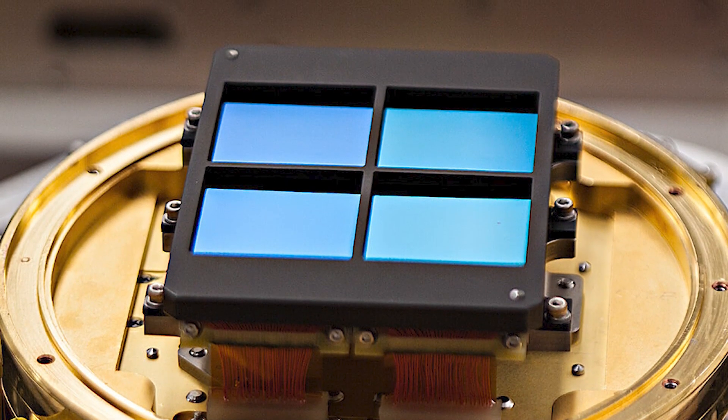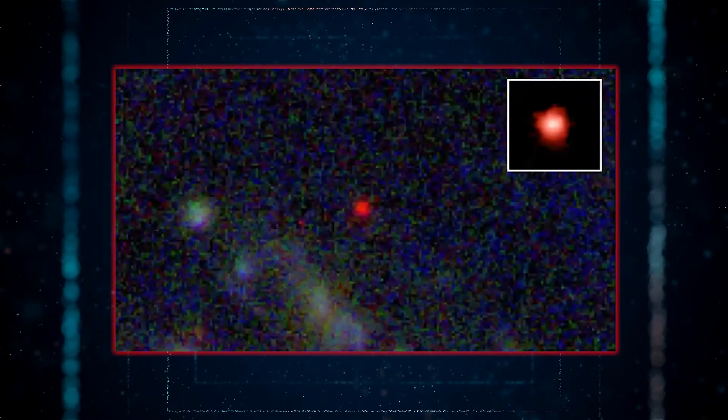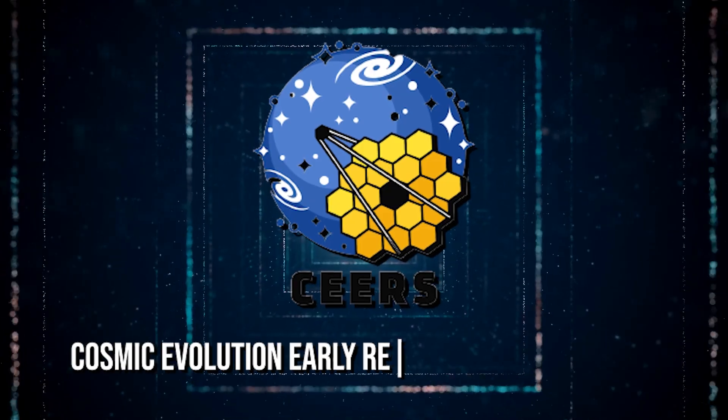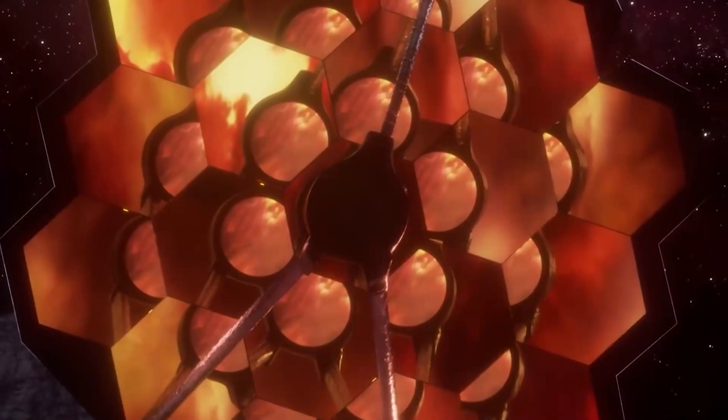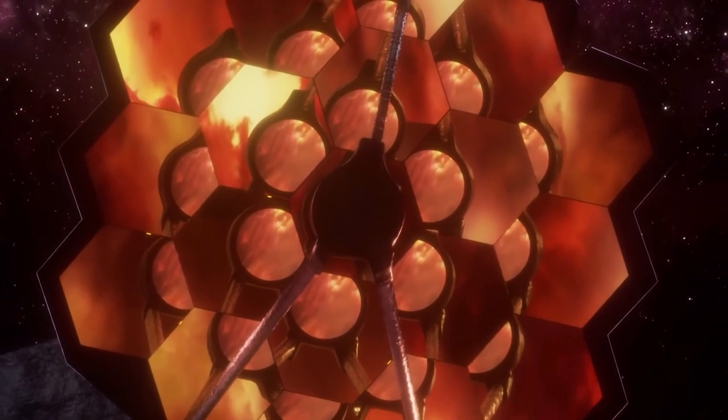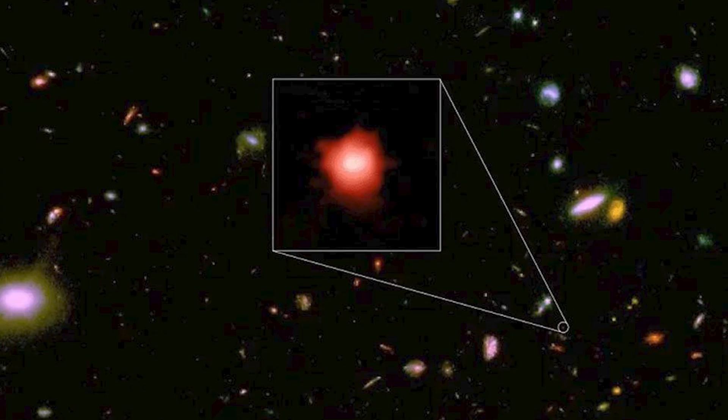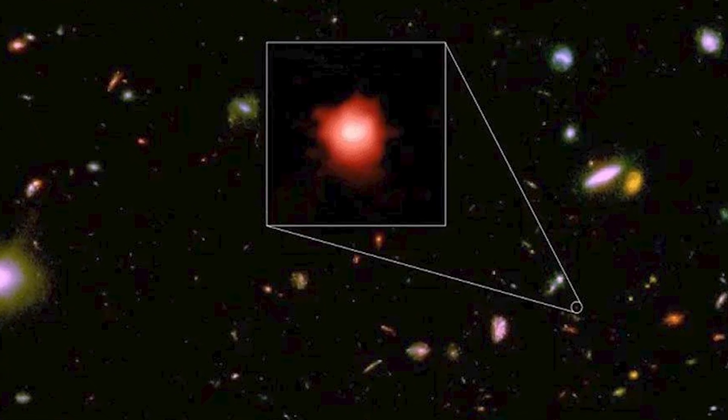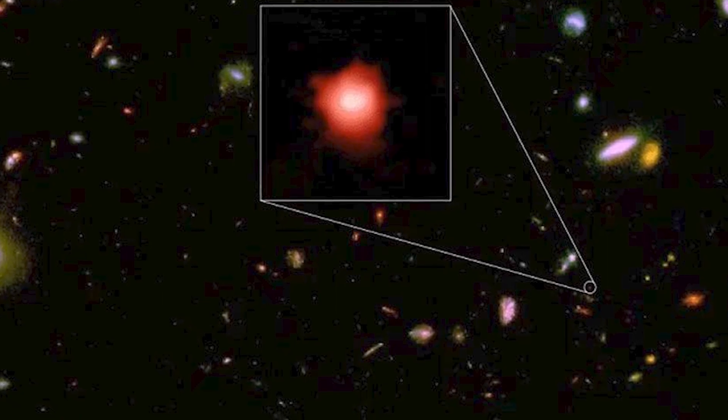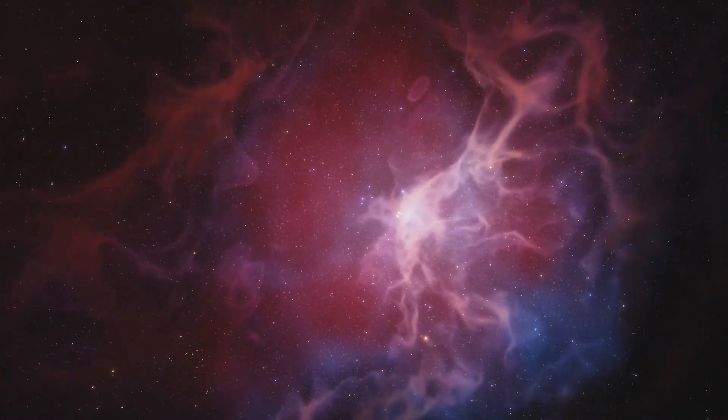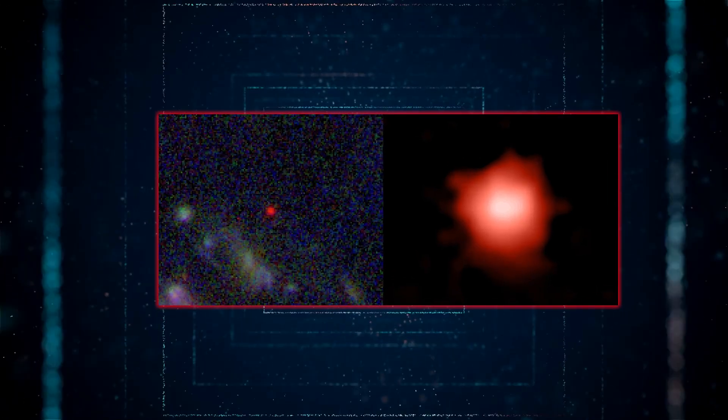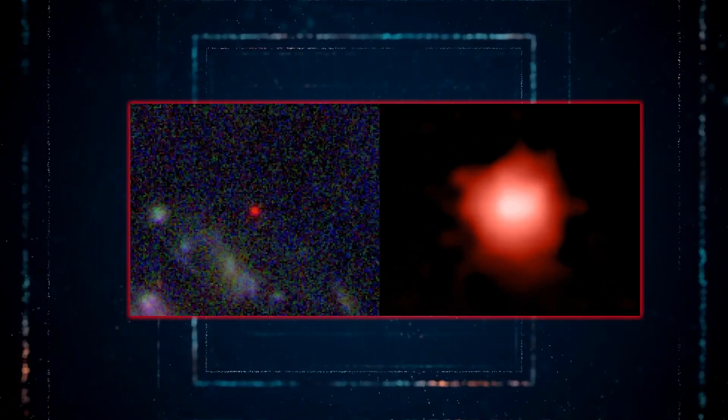Webb's near-infrared camera obtained the images that revealed these puzzling galaxies as part of the cosmic evolution early-release science program. Astronomers plan to soon turn Webb's mirror to these galaxies again to obtain light spectra of those distant dots. Spectra break down the observed light according to its wavelength composition and thus reveal the chemical and physical properties of its source. The spectrum will pretty immediately tell us if our hypotheses are correct.